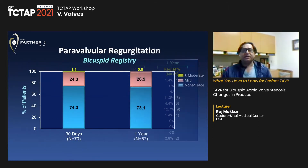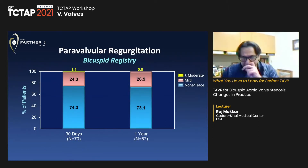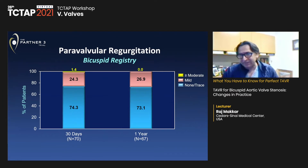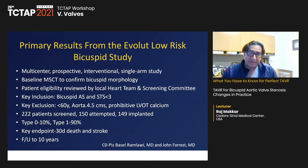Paravalvular regurgitation: mild PVL was present in about a quarter of patients, though this is with the Sapien 3, not the Sapien Ultra.